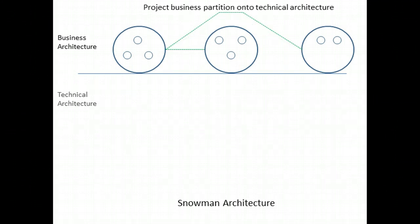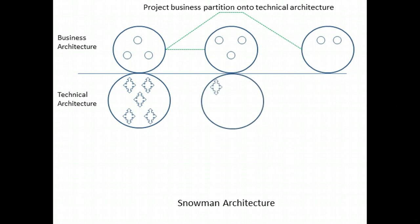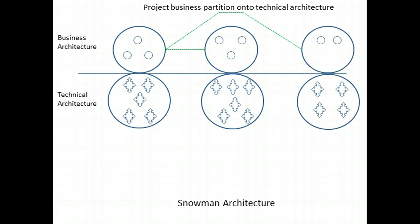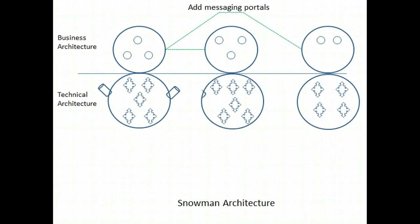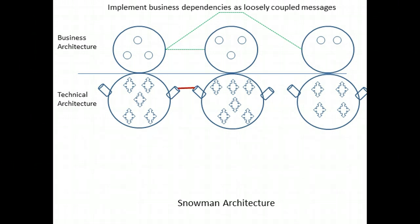Each synergy group in the business architecture has a corresponding service in the technical architecture — there is a one-to-one correspondence between synergy groups and services. At this point, we need not worry about how these services will be implemented. Each of the services is given portals through which asynchronous messages can be sent or received. We then identify specific asynchronous messages that will connect the technical services, each corresponding to one of the intergroup dependencies identified in the business architecture.